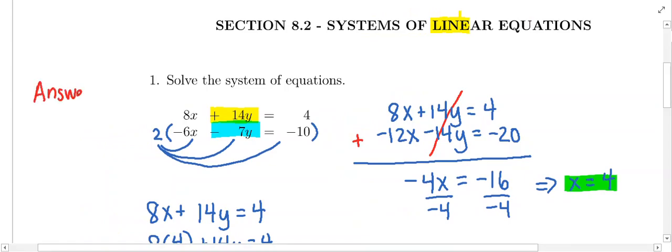I'll write over here. We can say x is 4, y is negative 2. Or we can just write it as an ordered pair. And we know x always goes first.